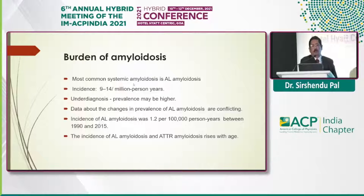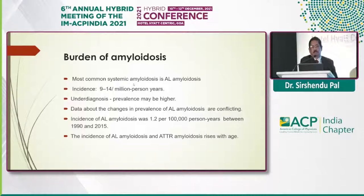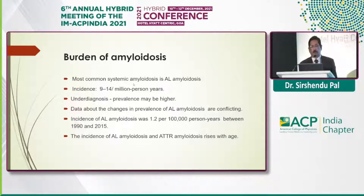The most common amyloidosis in developed nations is AL amyloidosis, while in India and developing countries it is AA amyloidosis. The overall incidence is very low — only 9 to 14 per million person-years — and there is obviously a lot of under-diagnosis. The incidence of AL amyloidosis was only 1.2 per 100,000 person-years and has remained static between 1990 and 2015, highlighting significant under-diagnosis. The incidence of AL and ATTR amyloidosis rises with age.